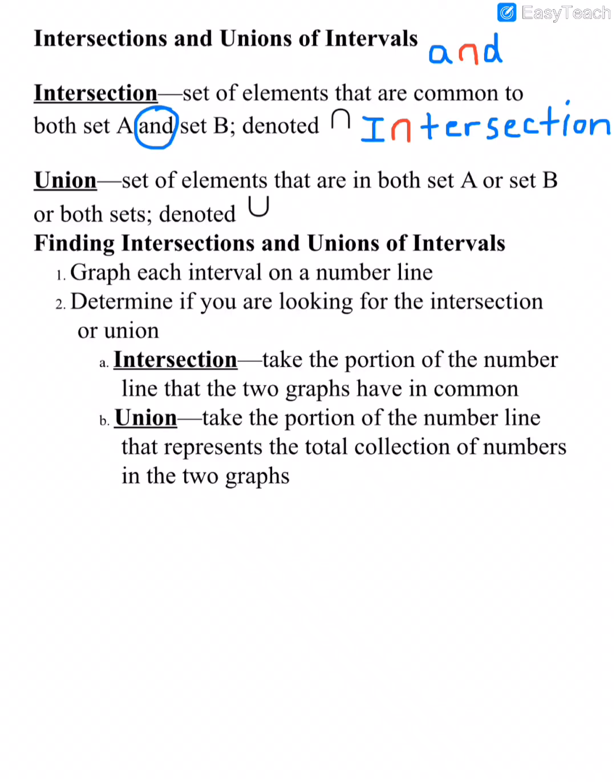Union is the set of elements that are in either set A or set B — anything that's in either set is included. The symbol for union looks like a U. To graph intersections and unions, we graph each interval separately. For the intersection, we only take the part of the two graphs that overlap. For the union, we take both graphs and put them together.